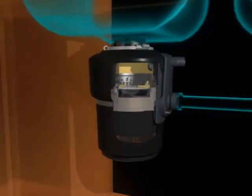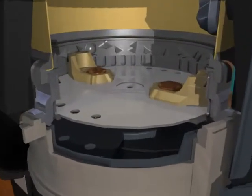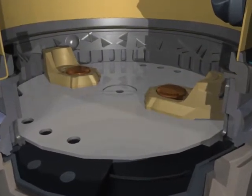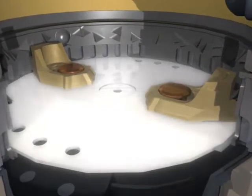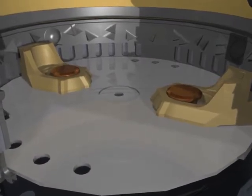In reality, disposers work in a different way and there are no blades involved. Instead, impellers, or lugs, mounted on a spinning plate use centrifugal force to continuously force food waste particles against a stationary grind ring.